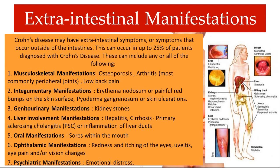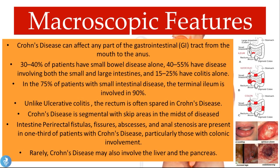Regarding the macroscopic features of Crohn's disease, it can affect any part of the GI tract. 30-40% of patients have small bowel disease alone, 40-55% have disease involving both the small and large intestines, and 15-25% have colitis alone. In 75% of patients with small intestinal disease, the terminal ileum is involved in 90% of cases.